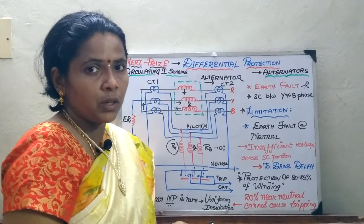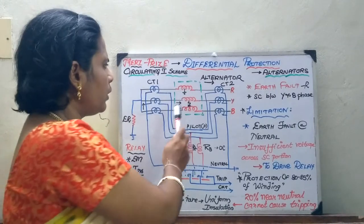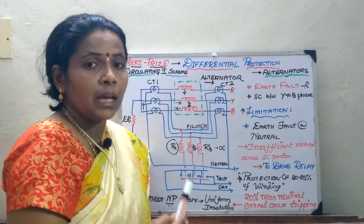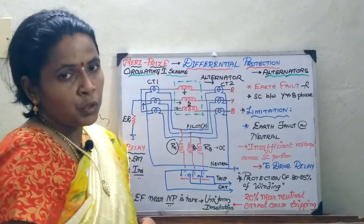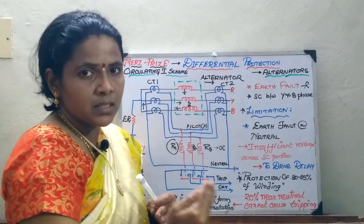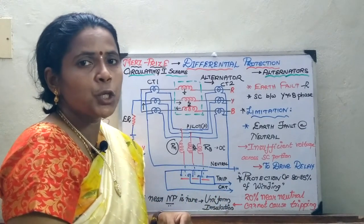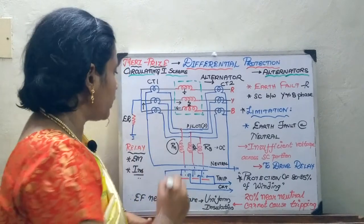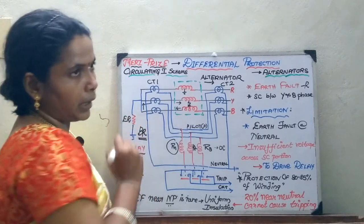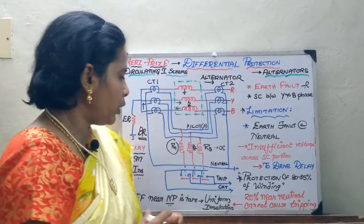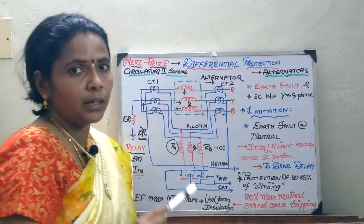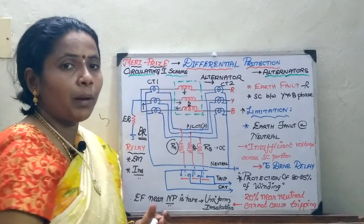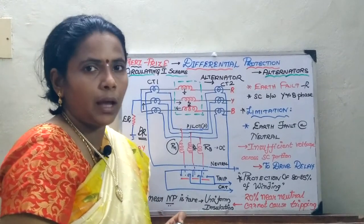In practice, the CT is placed near the alternator while the other CT is near the switchyard, so the pilot cable length can vary. If the pilot distance varies, the differential relay may operate under normal conditions — which must be prevented. To manage this, balancing resistors are connected as required. The relay used is an electromagnetic instantaneous type, since the alternator is a critical power system component and must be tripped immediately on fault.